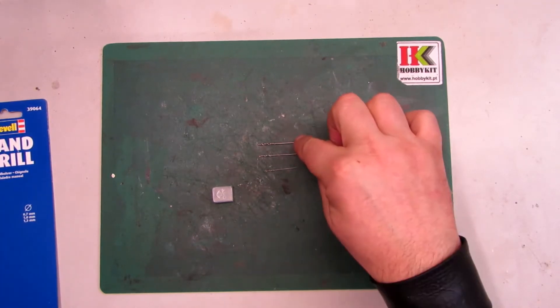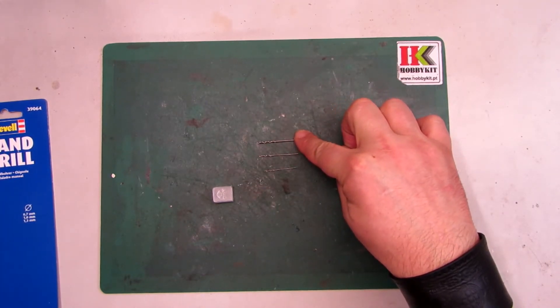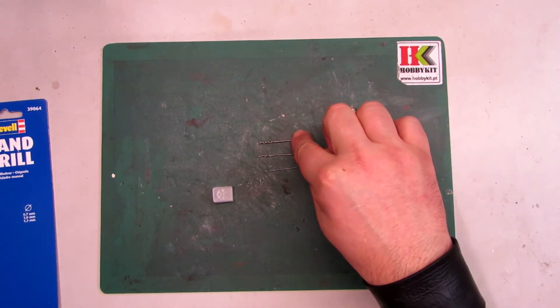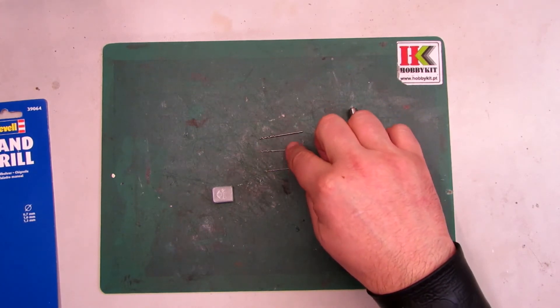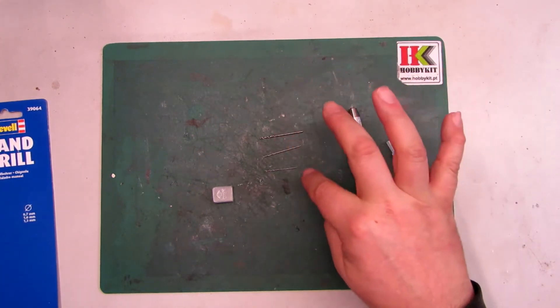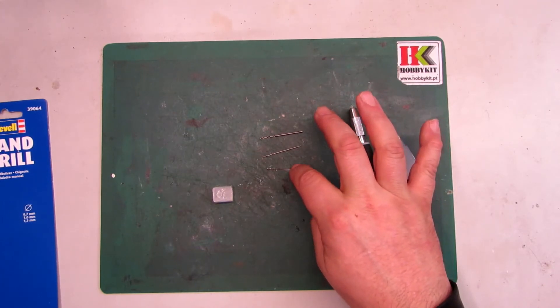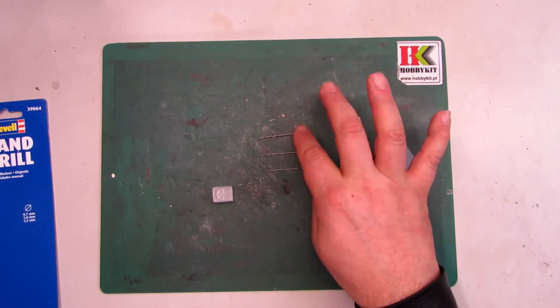So this one is the 1.3 millimeters. This is 1.0 millimeters and these four small things are the 0.7 millimeters.